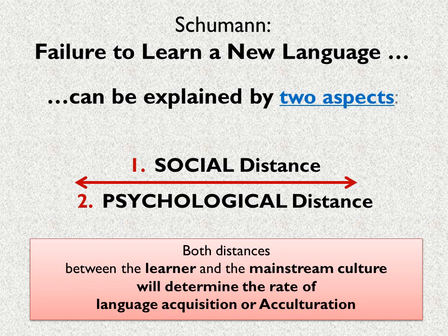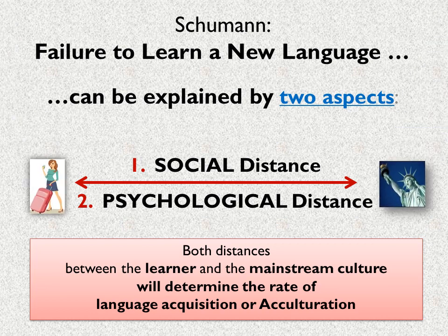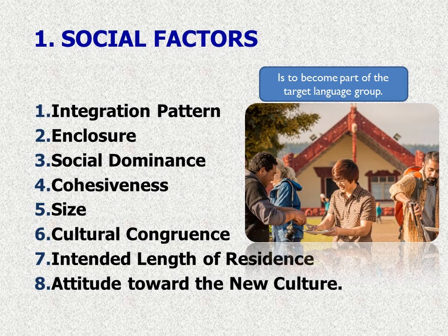Schumann says that failure to learn a new language can be explained by two important factors: social distance and psychological distance between the learner and the target language group. Both distances between the learner and the mainstream culture will determine the rate of language acquisition or acculturation. There are eight social factors, and when we talk about social factors, it means becoming part of the target language group.